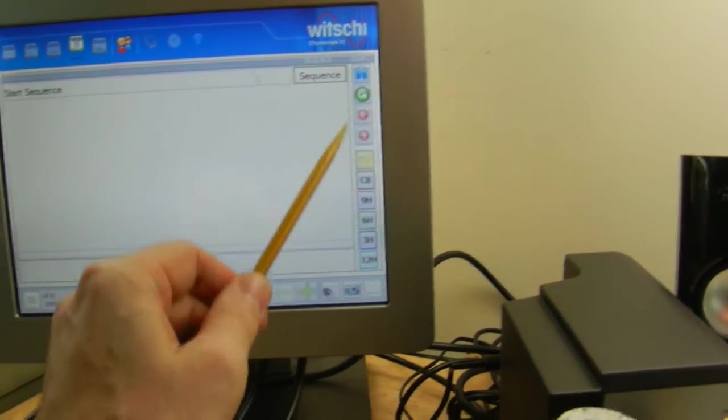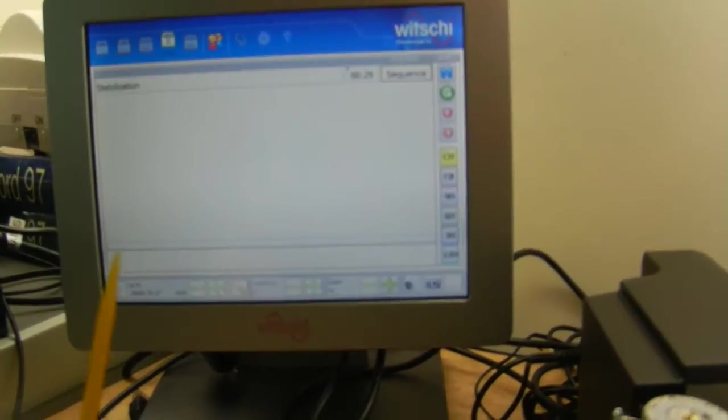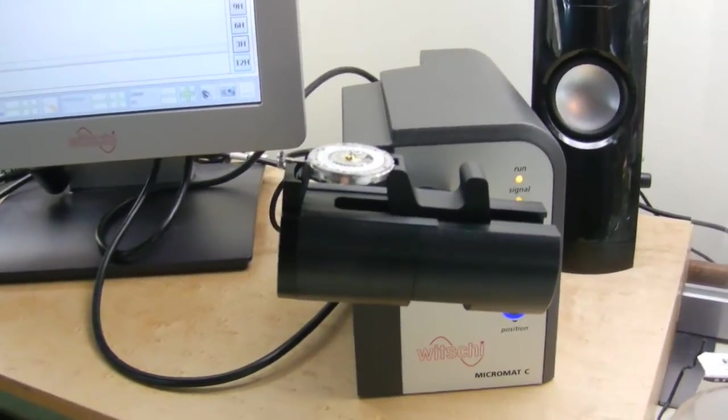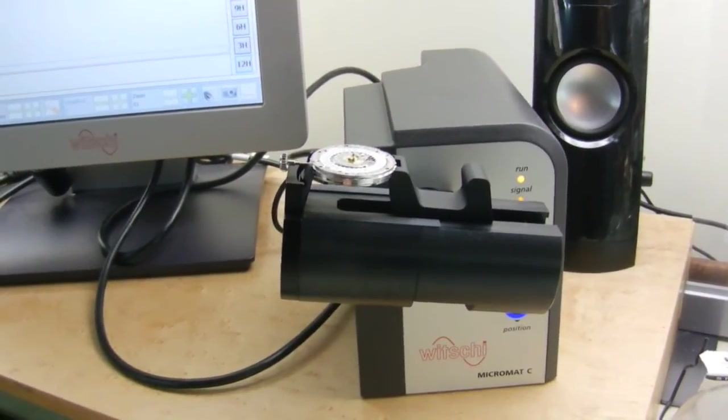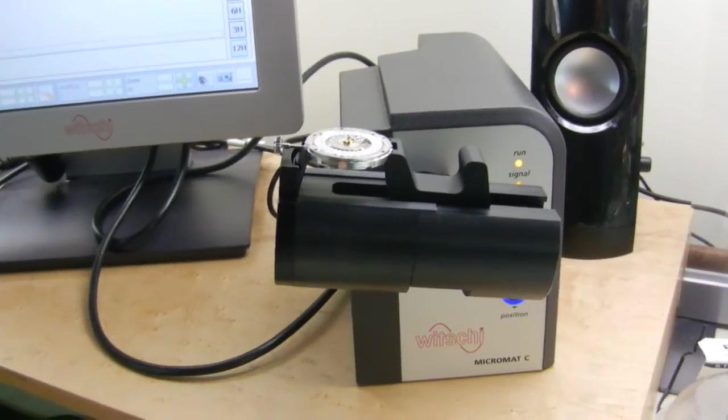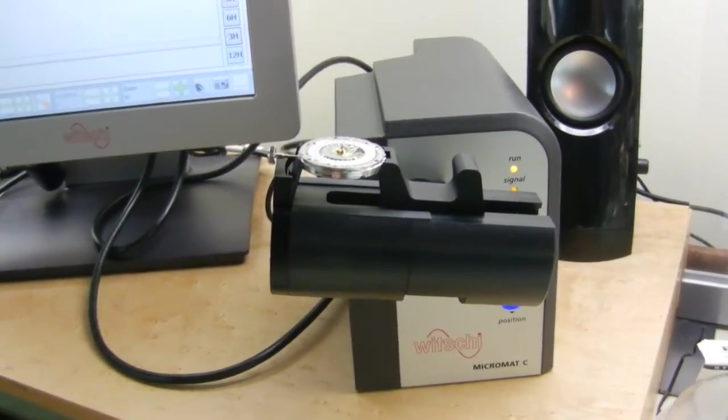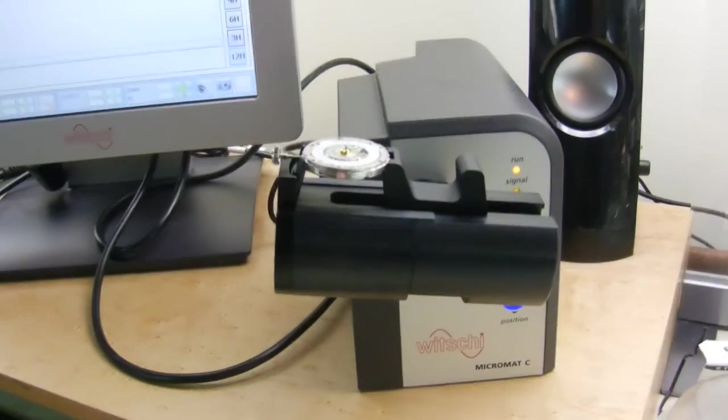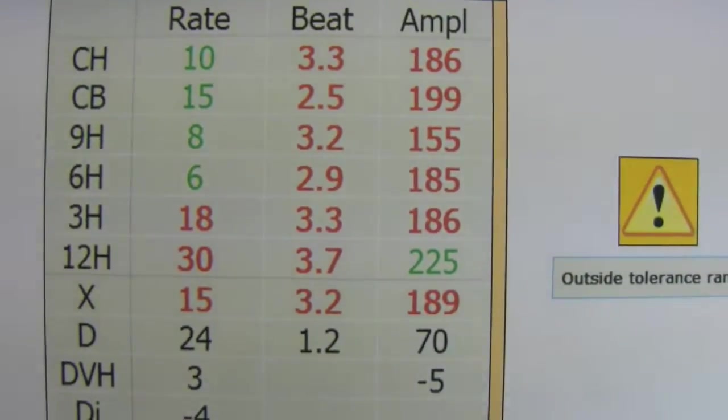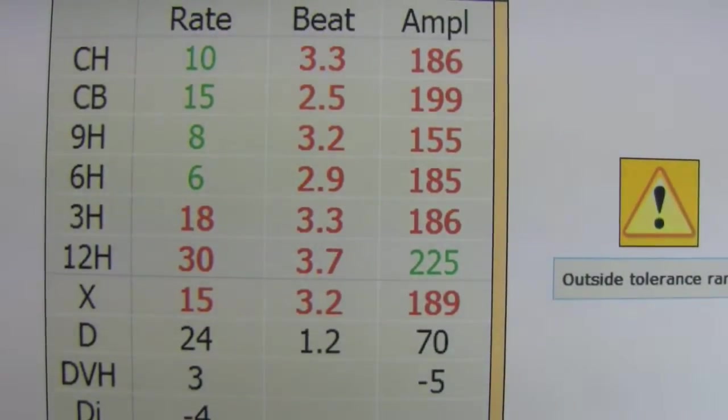So when we press it to start, first of all, it'll wait for 30 seconds for the watch to stabilize in that position. It'll then start the test and it'll time each position for one minute and then it'll move to the next. I'm just going to put the camera into the stand here. We'll come back to that watch in a moment.